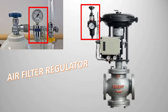This is basically an image of the air filter regulator. In the top left you are seeing a cylinder and the highlighted item is the air filter regulator. It has a pressure gauge so that we can see and regulate the pressure from the cylinder to the downstream.